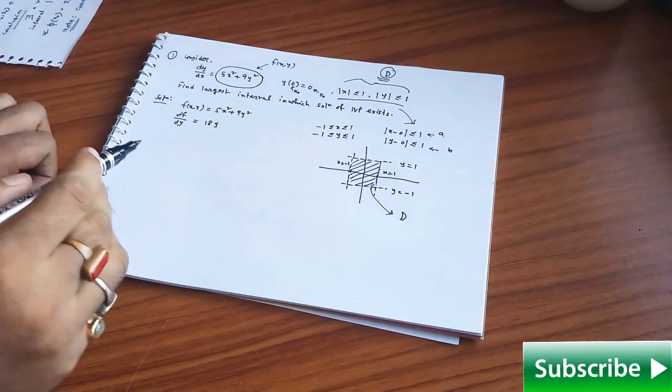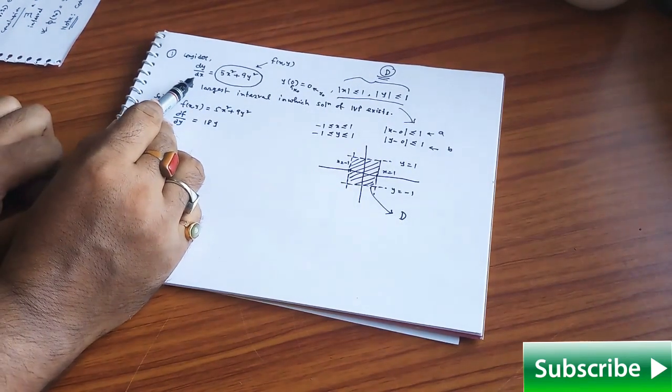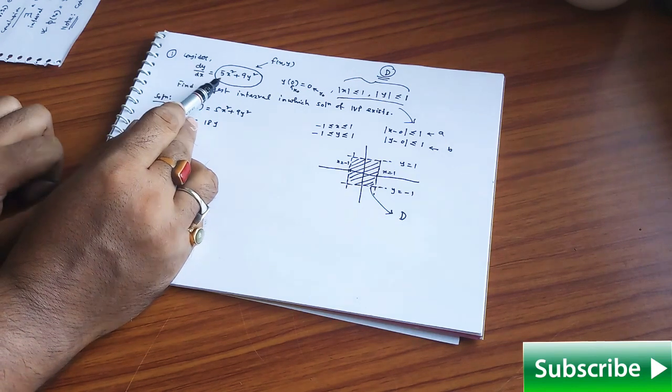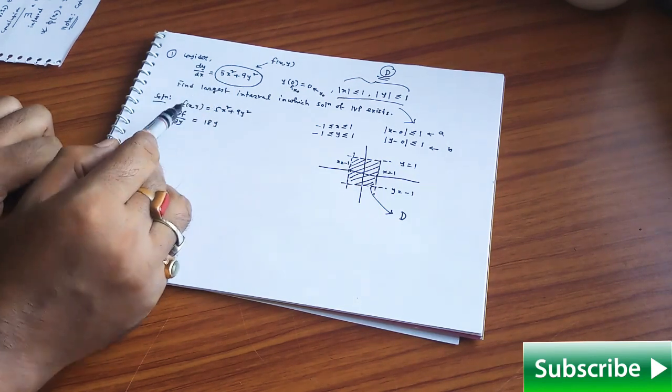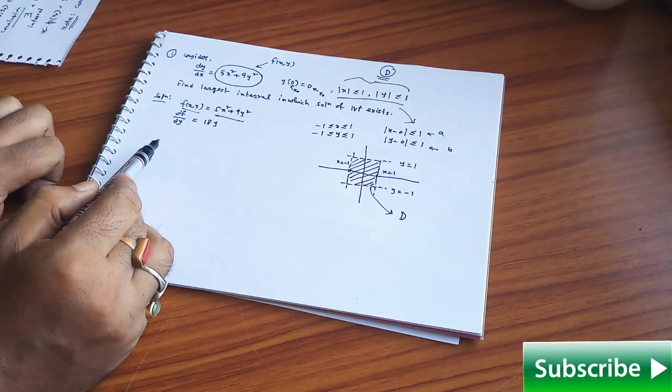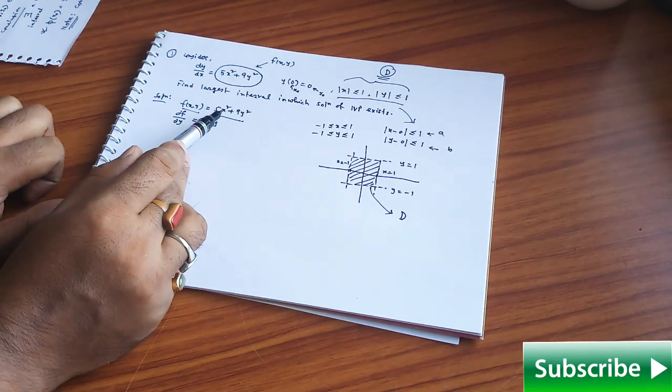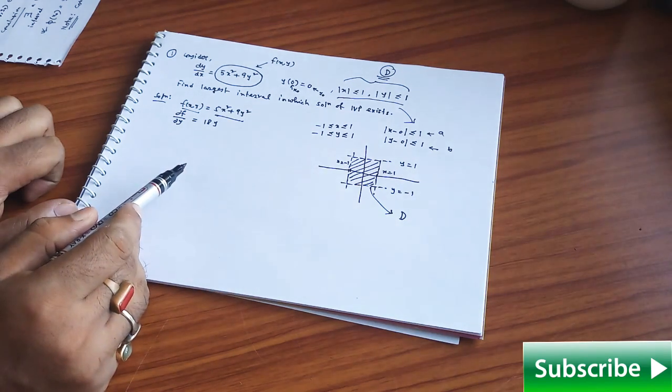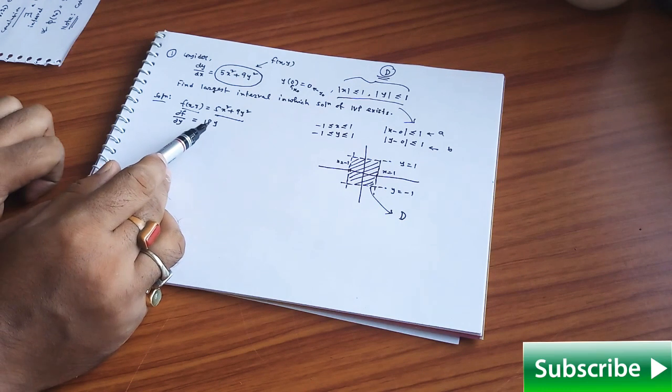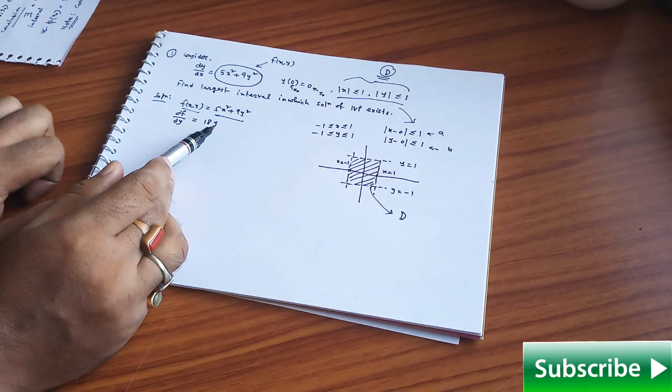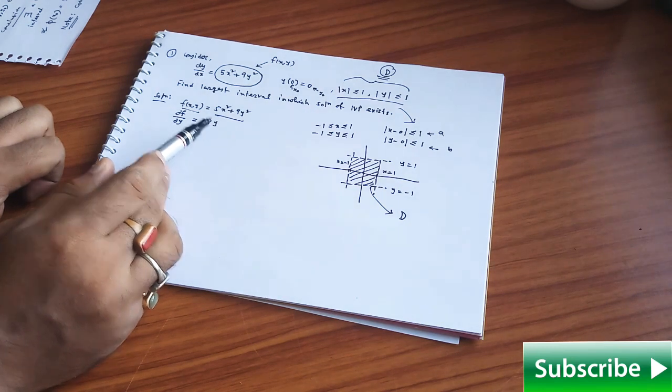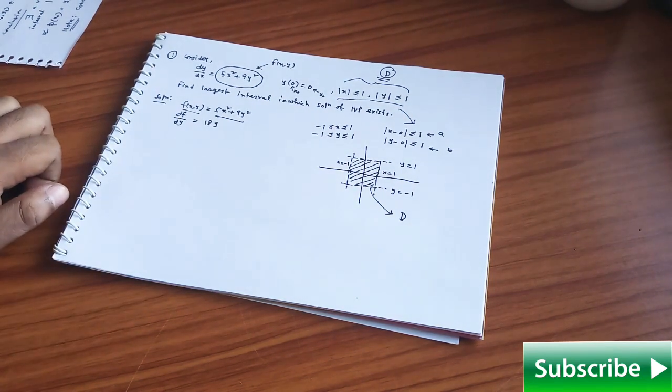And now come to this initial value problem here the initial value problem dy/dx it is this one. Your f(x,y), this is continuous function as well in that domain there is no problem and moreover you just find del f del y it is 18y it is also satisfying the given condition. First two hypothesis satisfied.